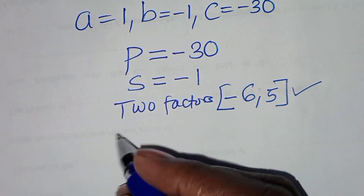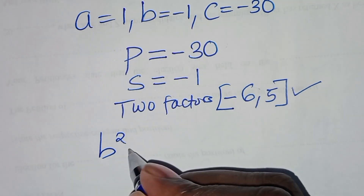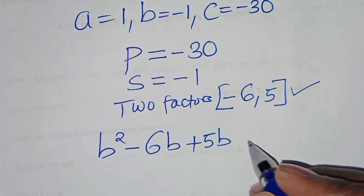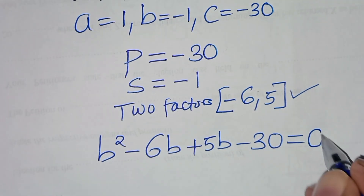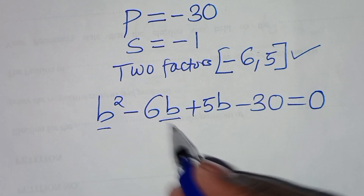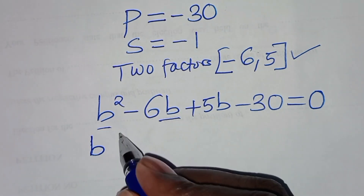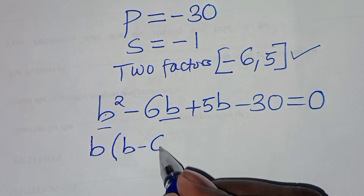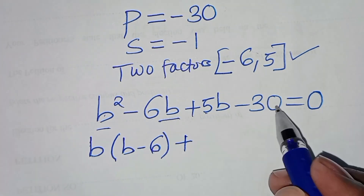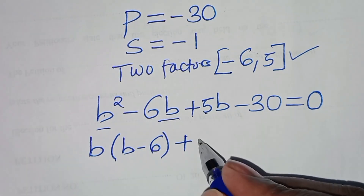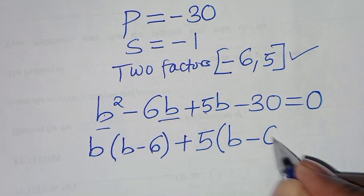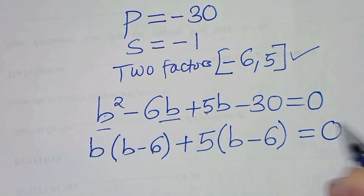These two factors satisfy the condition, so we rewrite as b squared minus 6b + 5b minus 30 = 0. Factoring b from the first two terms gives b(b minus 6), and factoring 5 from the last two terms gives 5(b minus 6).